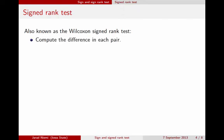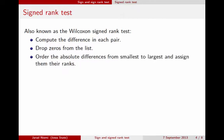So here's what we do. We compute the differences in each pair just like we've done before. Any zeros that are in that list we just drop those observations. Now we take the absolute value of those differences and we rank them from smallest to largest and then assign their ranks.